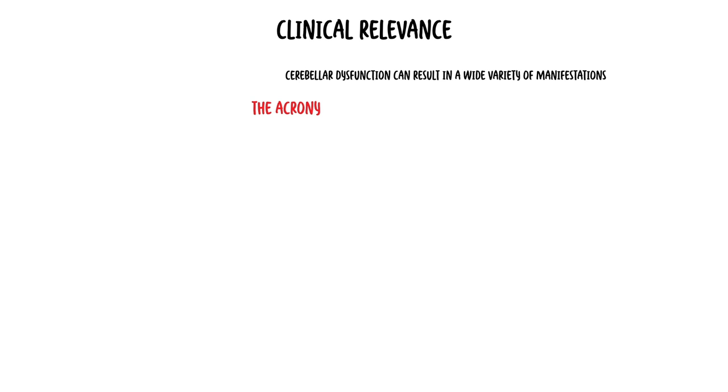Now onto some clinical anatomy. Cerebellar dysfunction or syndromes can result in a wide variety of manifestations. These manifestations can be remembered using the acronym DANISH. D stands for dysdiadochokinesia, which is difficulty in carrying out rapid alternating movements. A stands for ataxia, which is the presence of abnormal uncoordinated movements.